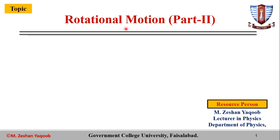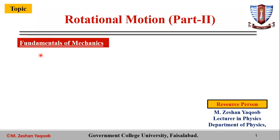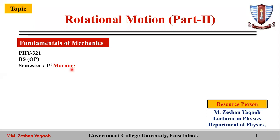We will discuss this topic related to our course, Fundamentals of Mechanics — the basics of mechanics. We will keep all the basic things in the discussion and will not go into depth. The course code of this class is PHY 321, BS Orthotics and Prosthetics, first semester morning, fall 2021.